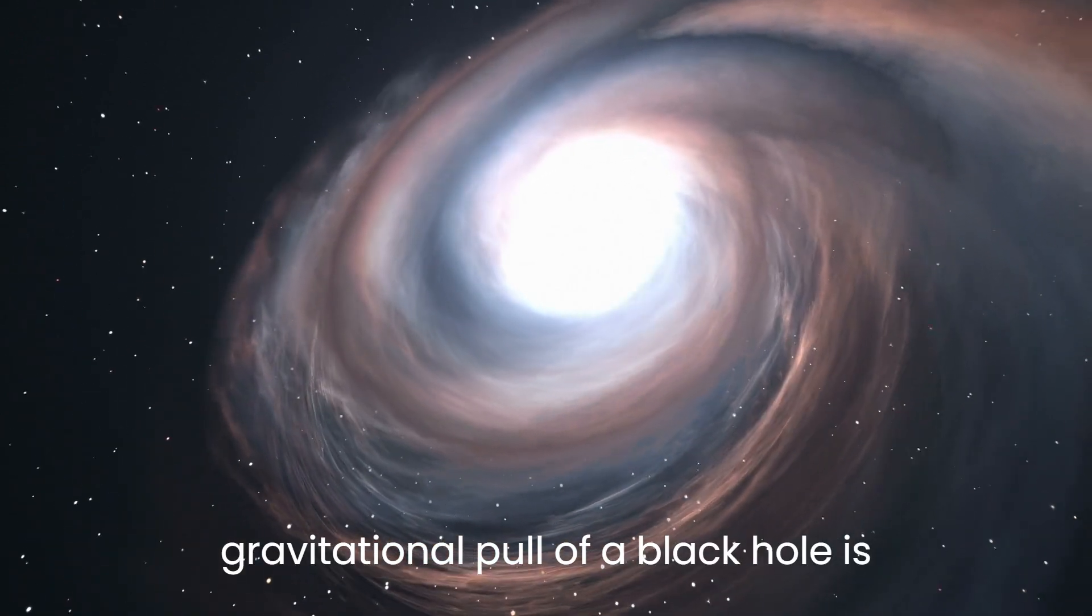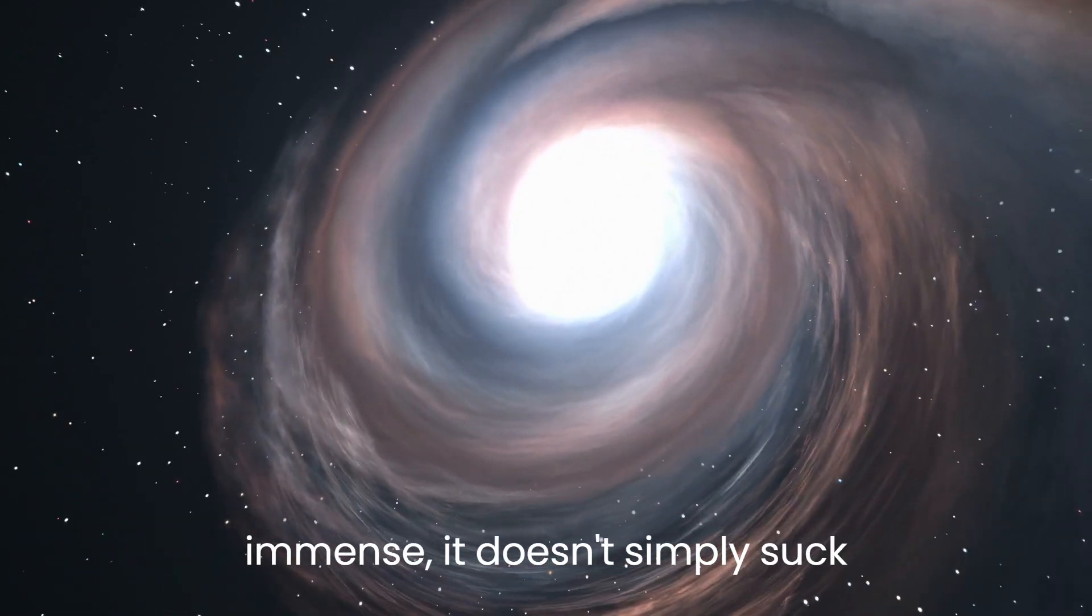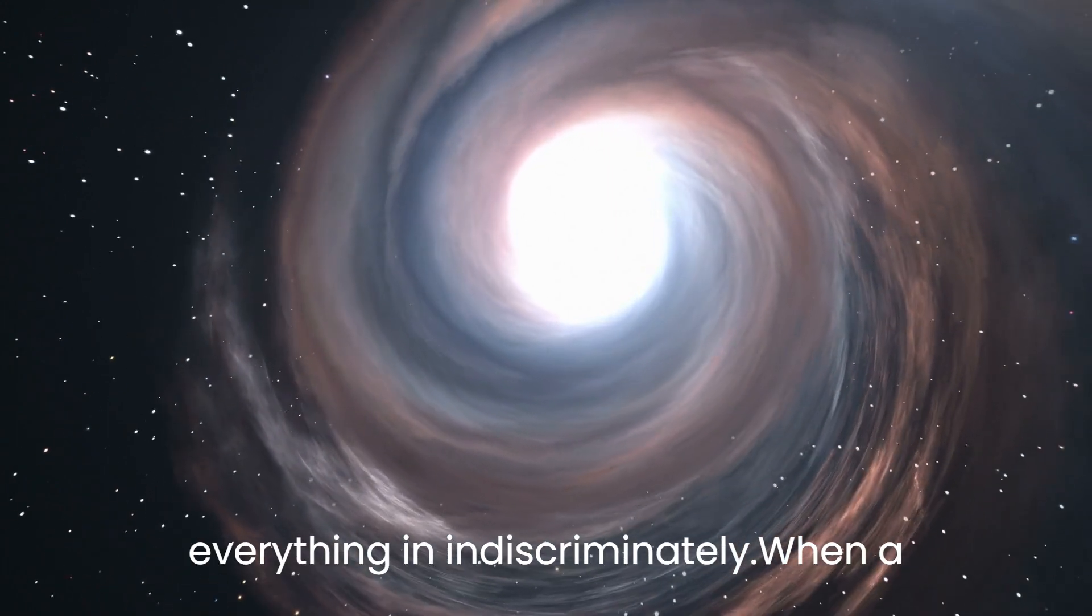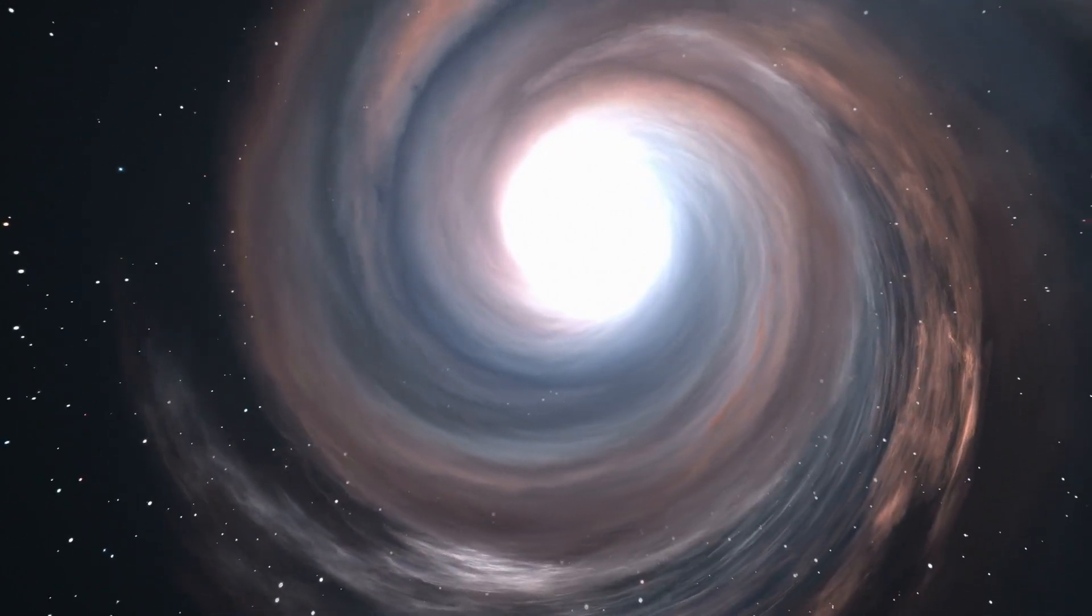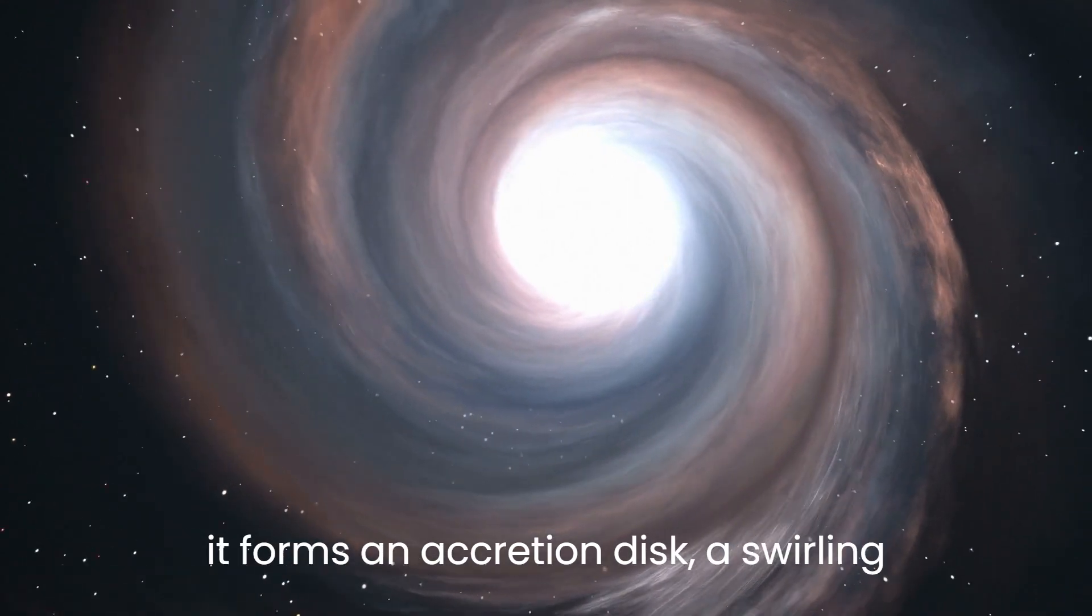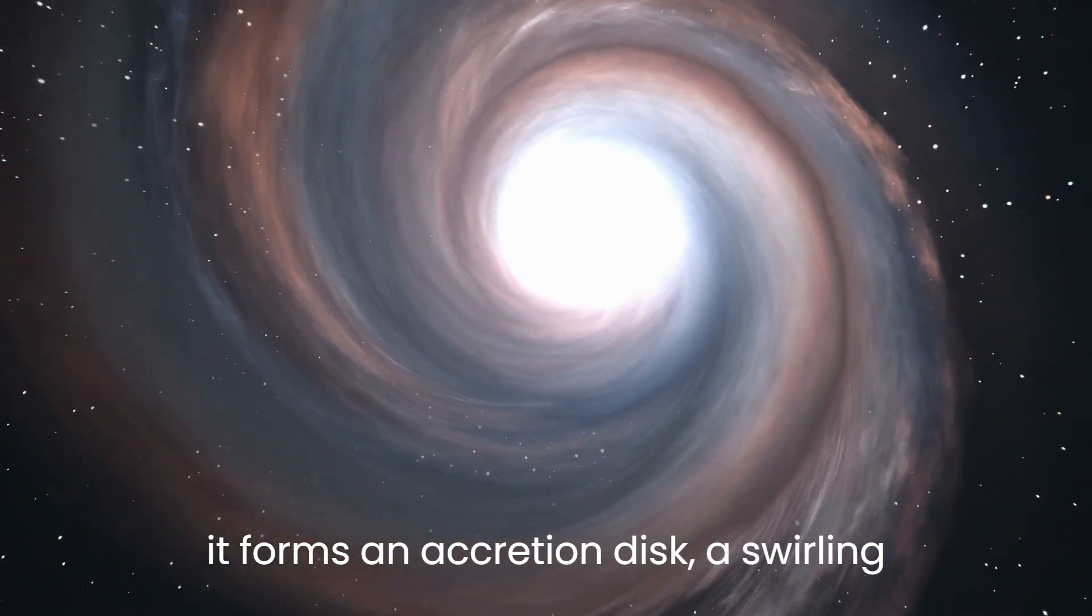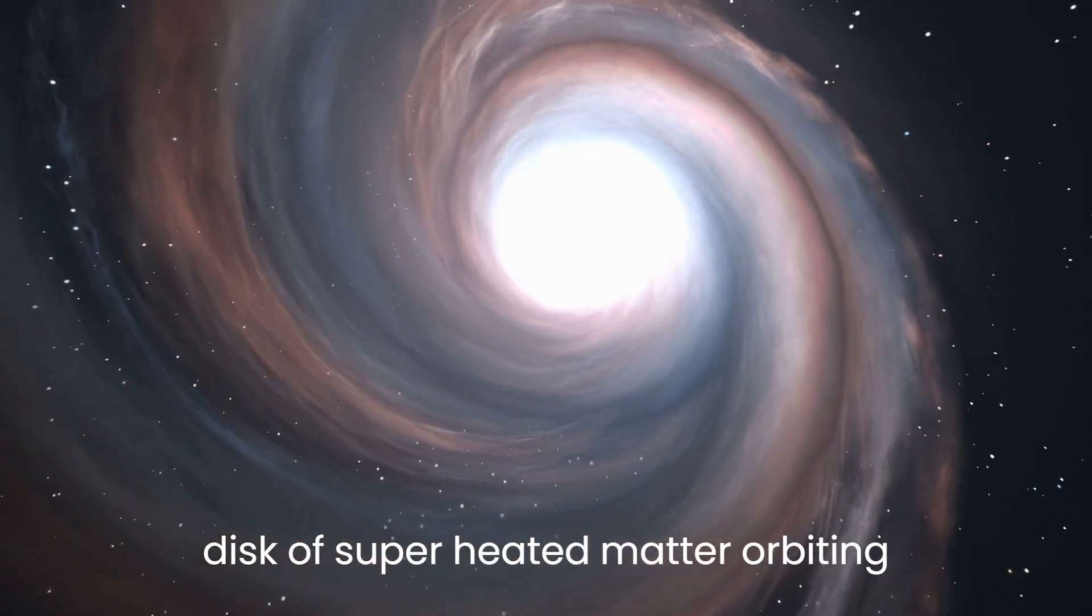While the gravitational pull of a black hole is immense, it doesn't simply suck everything in indiscriminately. When a black hole is actively consuming matter, it forms an accretion disk, a swirling disk of superheated matter orbiting around it.